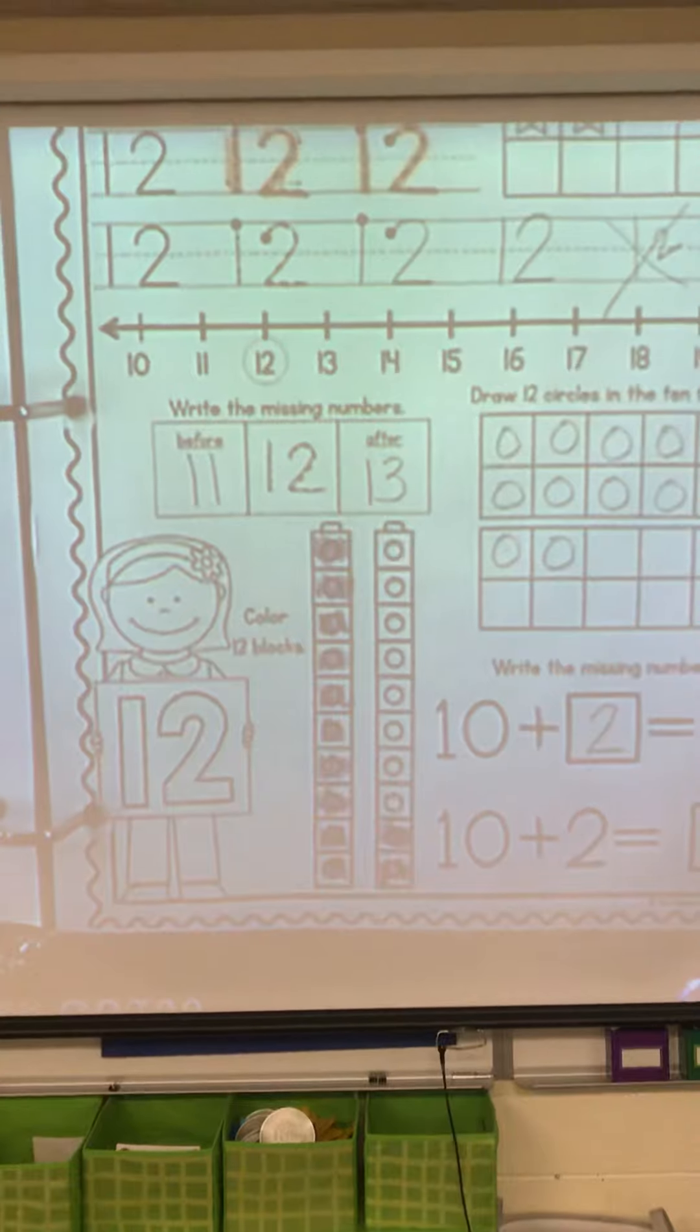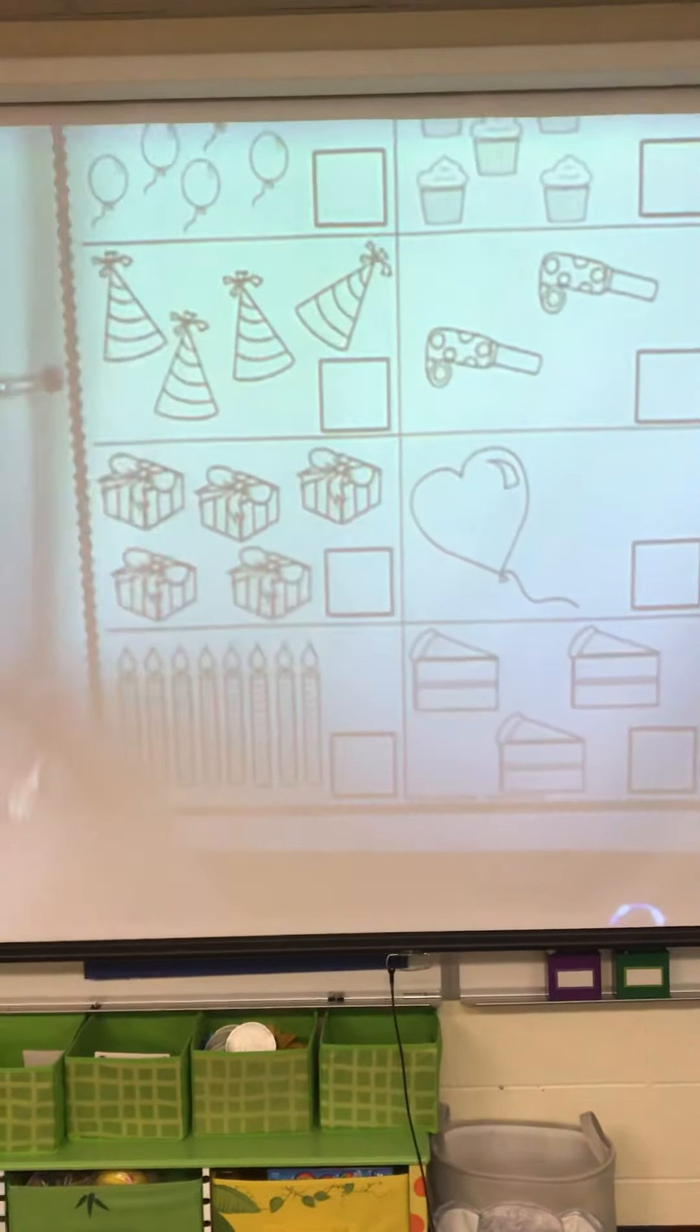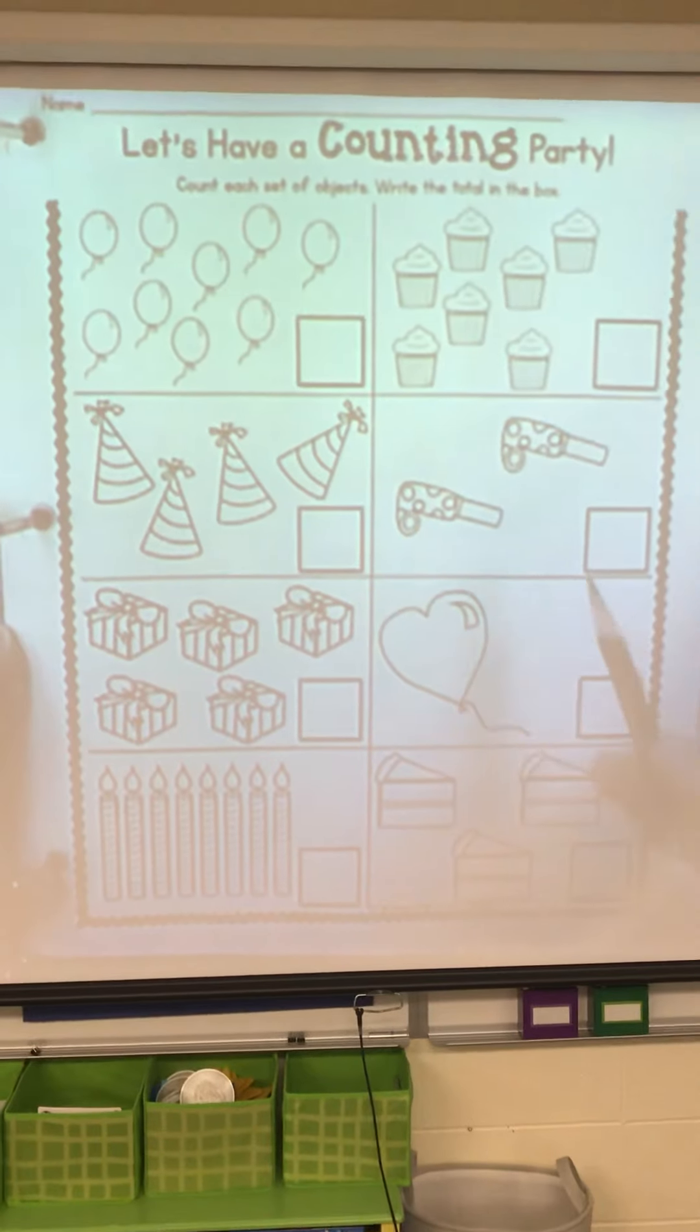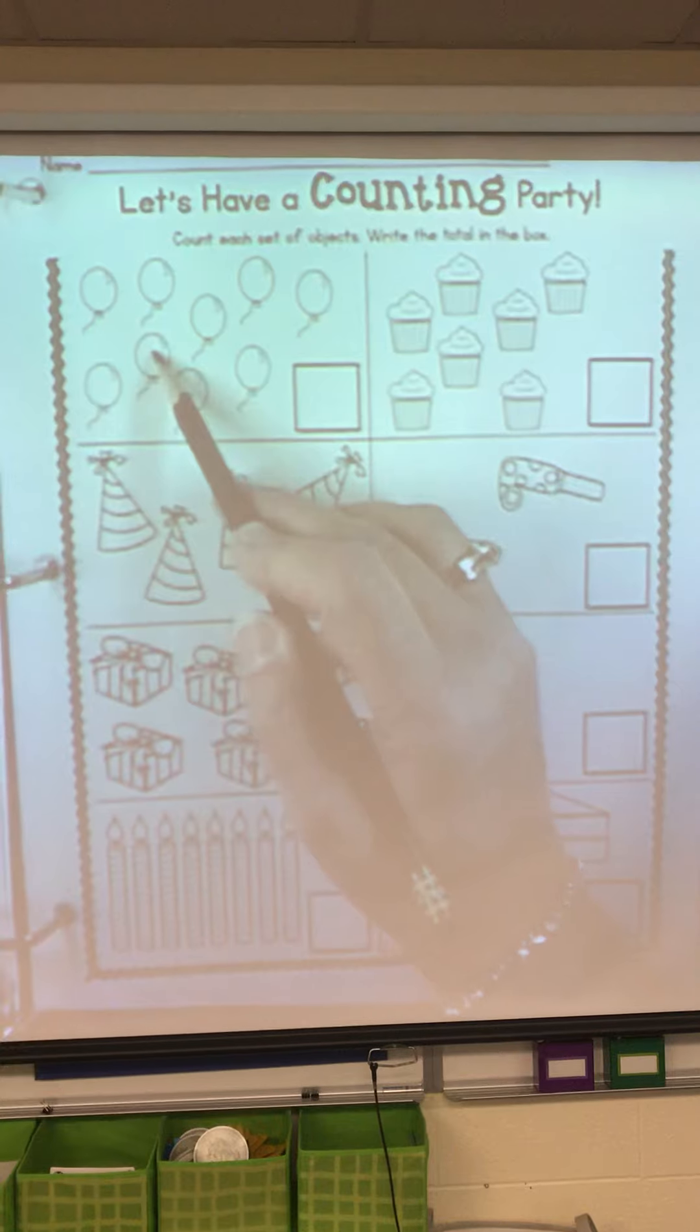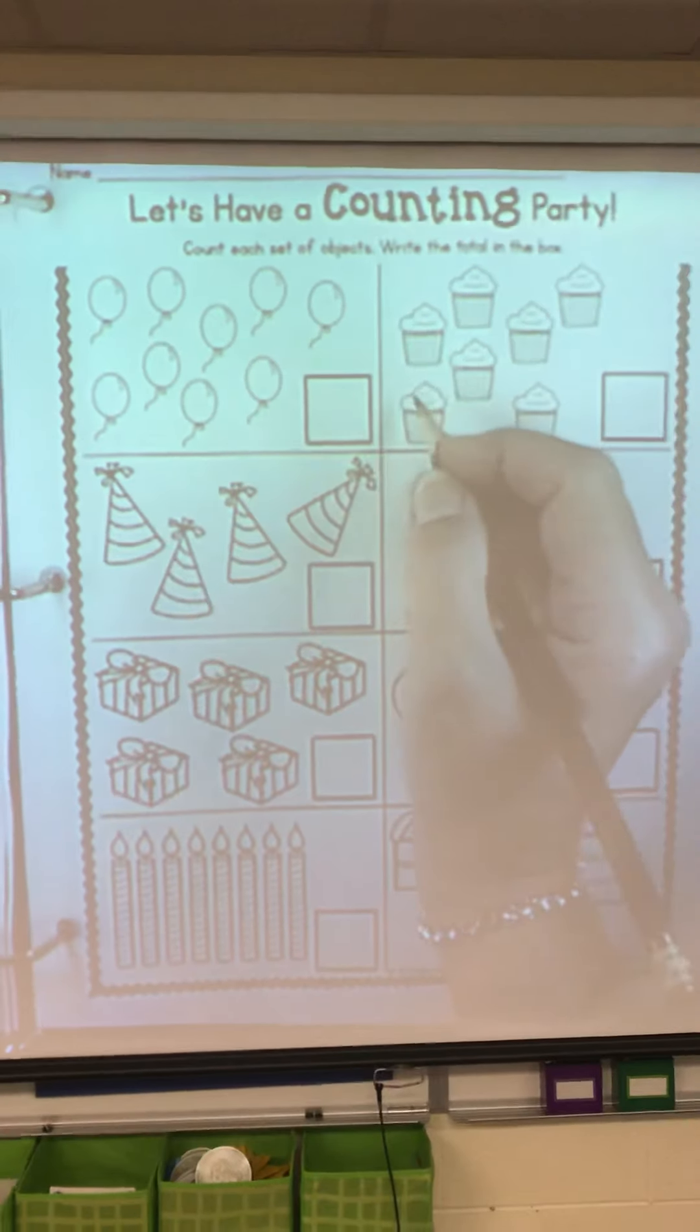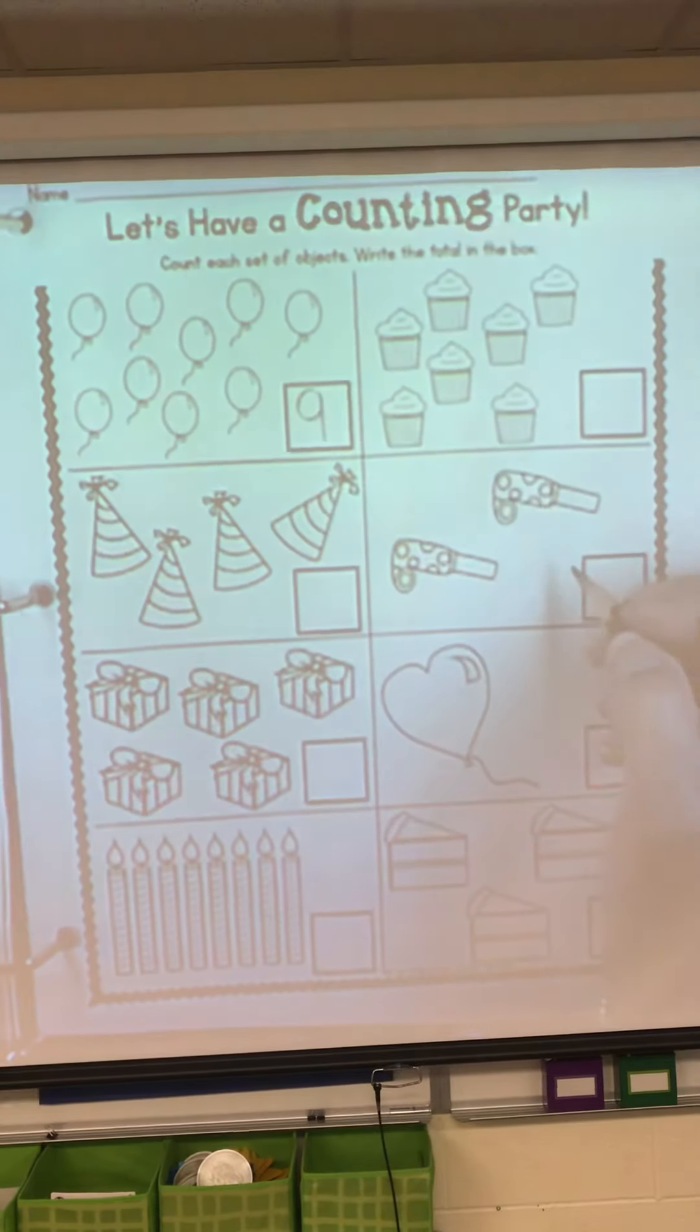Turn the page in your binder so we can do our other math paper. All we have to do is use our pencil to count and write the number. 1, 2, 3, 4, 5, 6, 7, 8, 9. Do you remember how to make a 9? A loop on top of a long straight line.